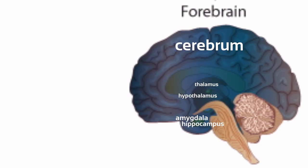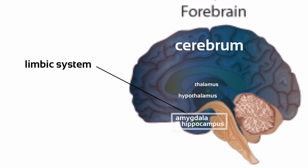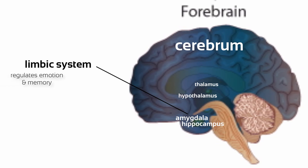Now let's talk about the limbic system. This group of structures includes the hippocampus and the amygdala, and it is generally responsible for regulating emotion and memory. The hippocampus plays a role in our ability to create new memories, while the amygdala is important in processing emotional information.